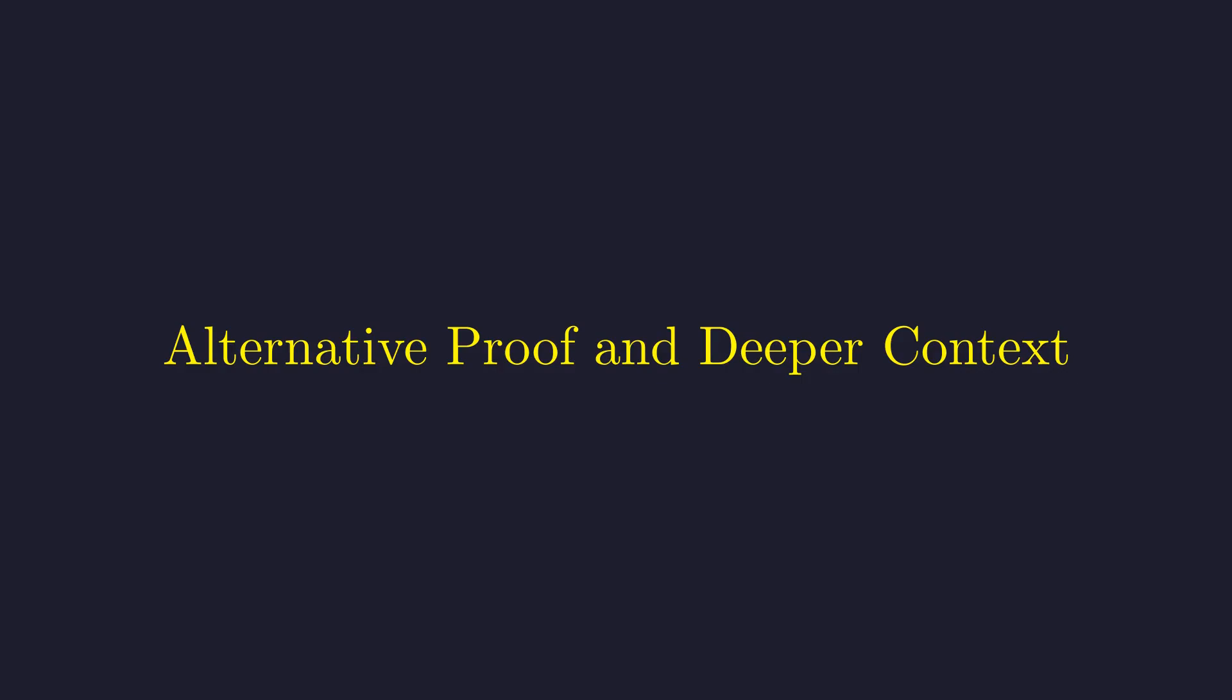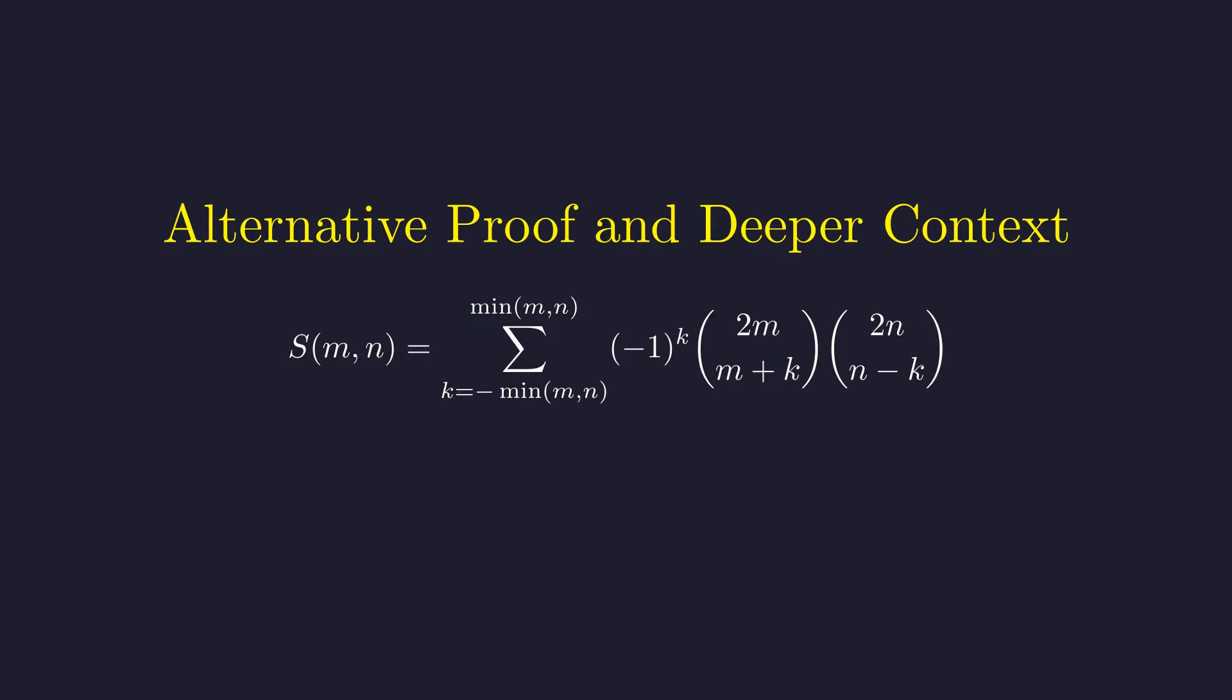Now for those of you who want to see more, this inductive approach isn't the only way to prove this result. The supercatalan numbers can also be expressed as this alternating sum of products of binomial coefficients. Since each binomial coefficient is an integer, their sum is also an integer. You can verify this identity by showing that both sides satisfy the same recurrence relation and base case.